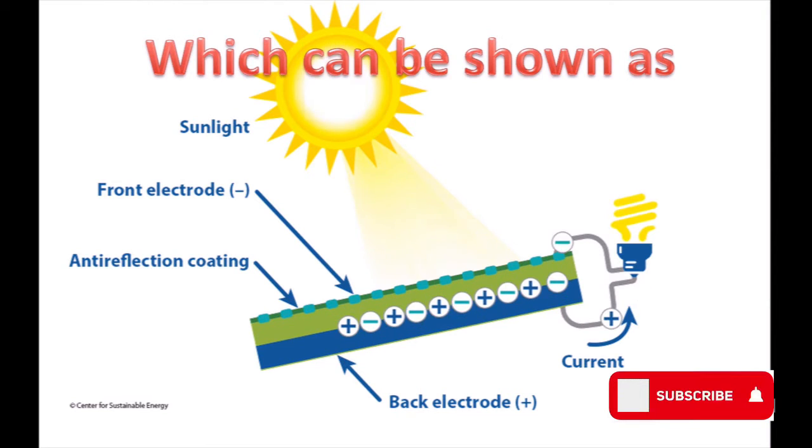The front electrode and anti-reflecting coating help photons pass to the P-N junction. The back electrode causes electron flow through the conductor, creating current.